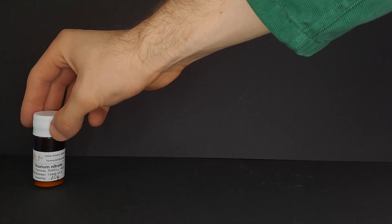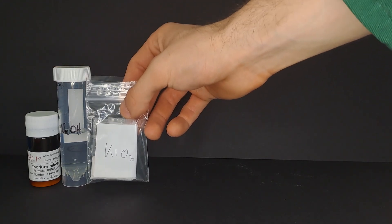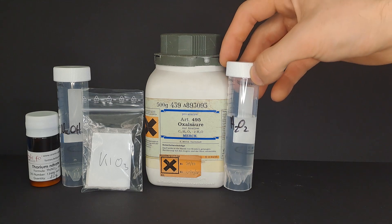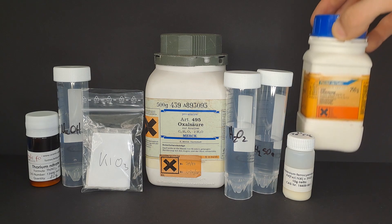Here are the chemicals we need. Thorium nitrate, sodium hydroxide, potassium iodate, oxalic acid, hydrogen peroxide, sulfuric acid, potassium hexacyanophariate 2 and potassium chromate.